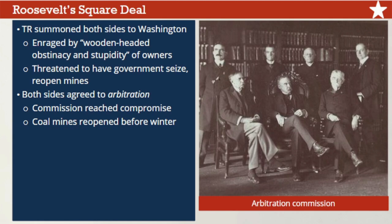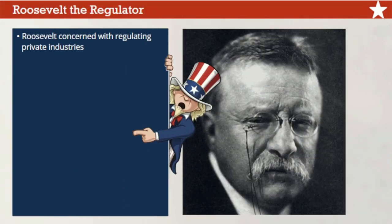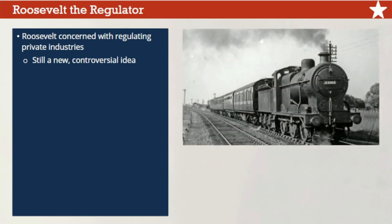Theodore Roosevelt may not have resolved the coal strike single-handedly, but his willingness to get involved formed a striking contrast with previous presidents, who considered it simply not their job to intervene in labor crises. Proud of himself, Roosevelt said he had only tried to give both sides a 'square deal.' The name stuck. The square deal became Roosevelt's name for his domestic agenda going forward, and his slogan when he ran for re-election in 1904. As a progressive president, he was concerned with regulating aspects of society that worked against the average American — including government oversight of private industries like the railroads.